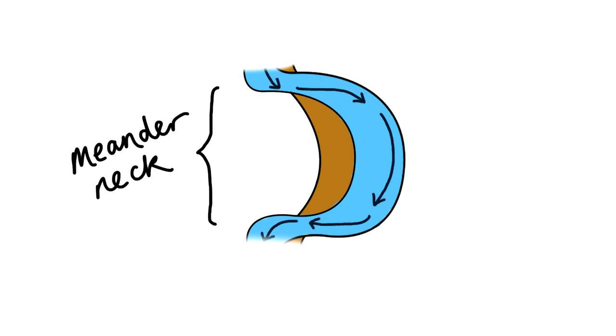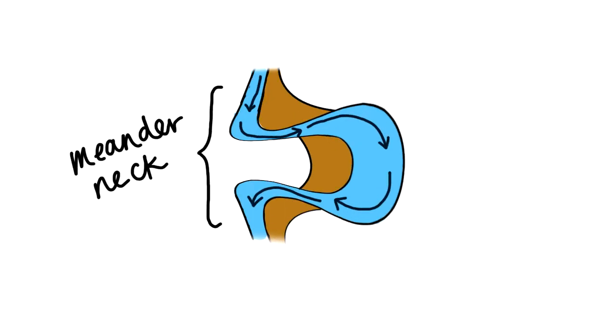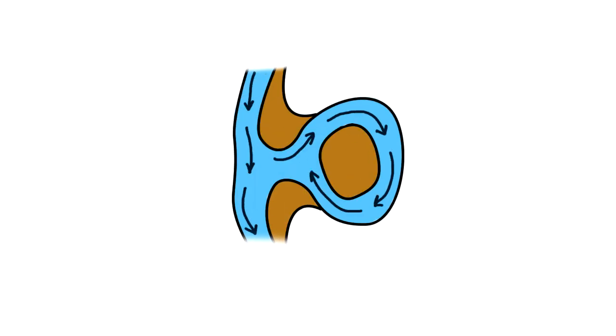Eventually, the meander neck begins to narrow. In times of high discharge, such as a flood, it's more efficient for a river to flow through the neck of a meander than around it, and when discharge levels resume to normal, the water continues to follow this course.